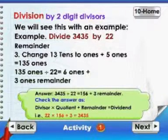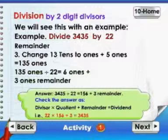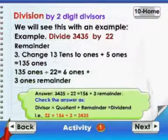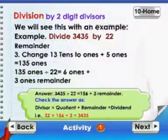Answer: 3435 divided by 22 is equal to 156 with remainder 3.